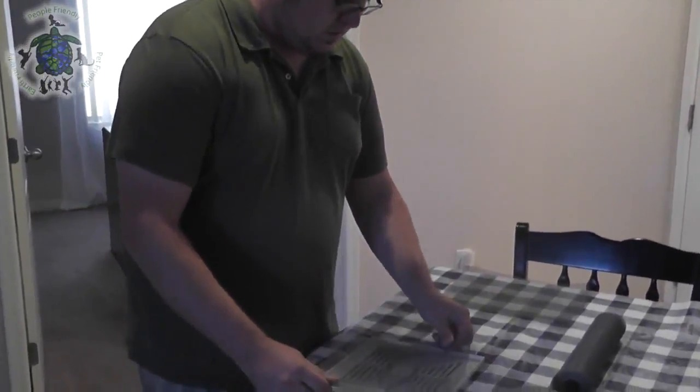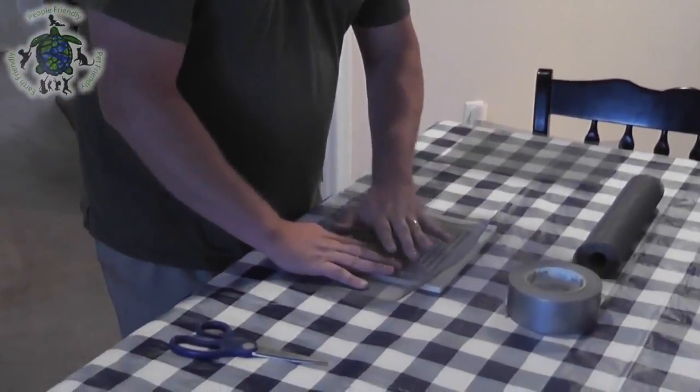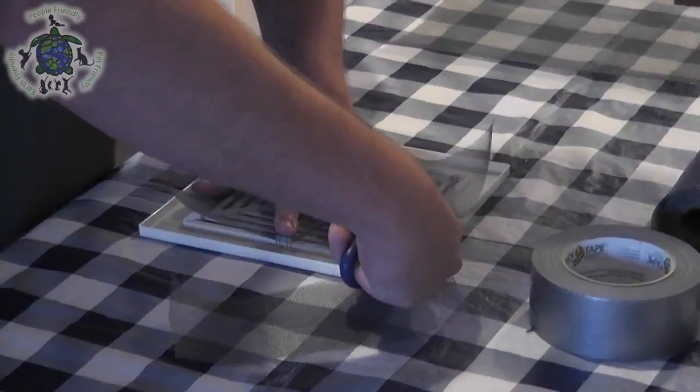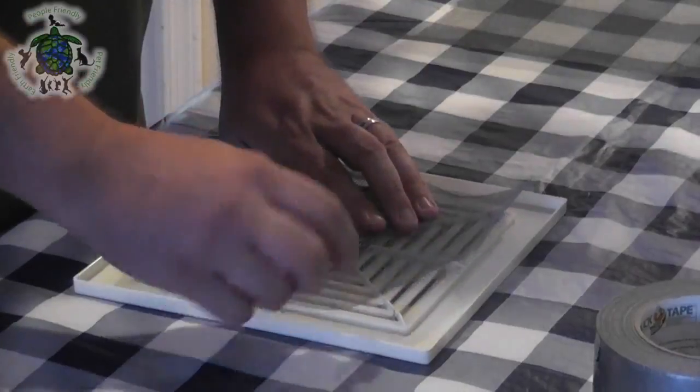Once you have your clean plate, you want to take your screen and trim it down to make sure that it fits completely within the plate so you can tape it down.